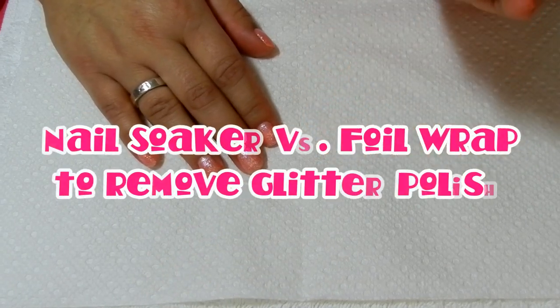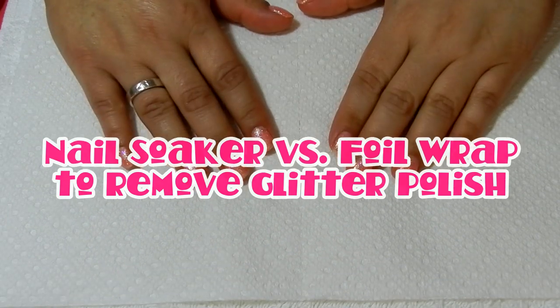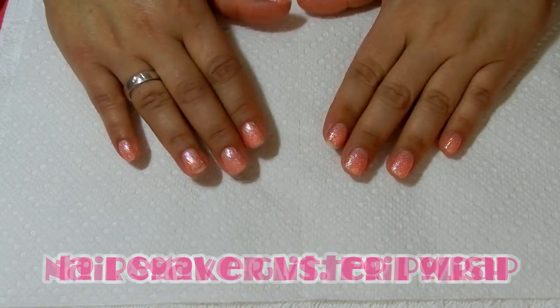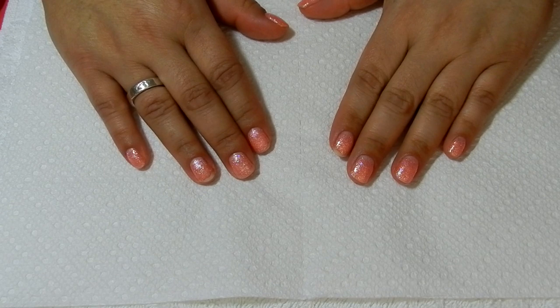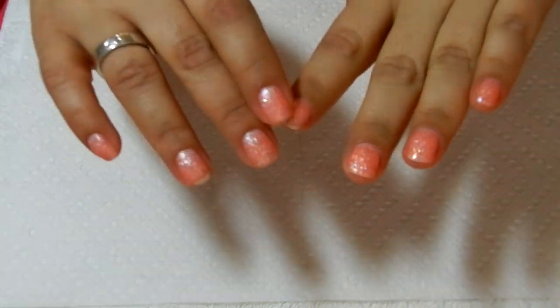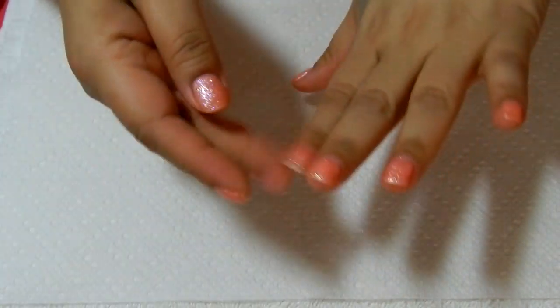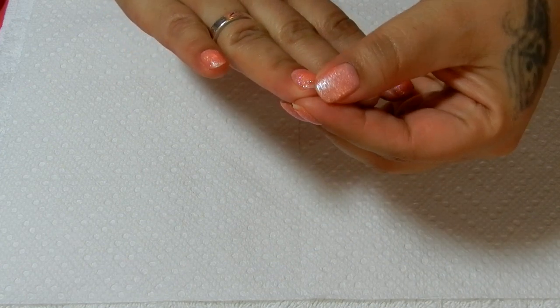Hey everybody, welcome back to Pretty Things Rock. In this edition, I'm going to be doing a comparison of nail soaker versus the foil wrap to remove glitter nail polish. As you can see, I have some chips here from doing so much housework.